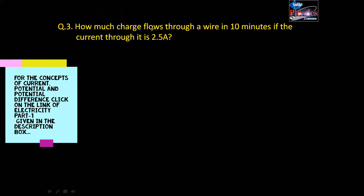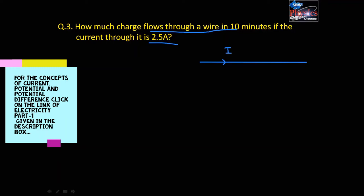Question number 3: How much charge flows through a wire in 10 minutes if the current through it is 2.5 ampere? If a wire has a current of 2.5 ampere flowing for 10 minutes, we have to find out how much charge flows through the wire. Current and time are both given, so we need to find the charge.